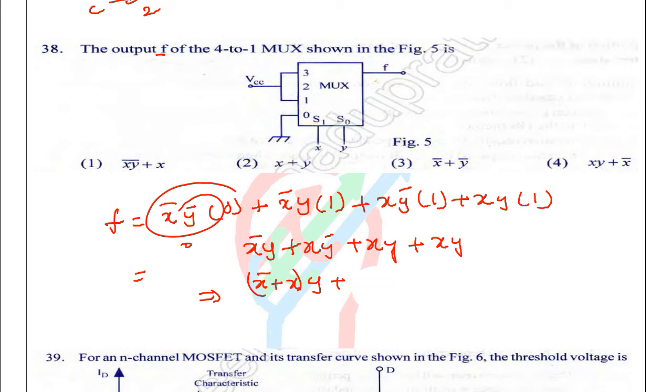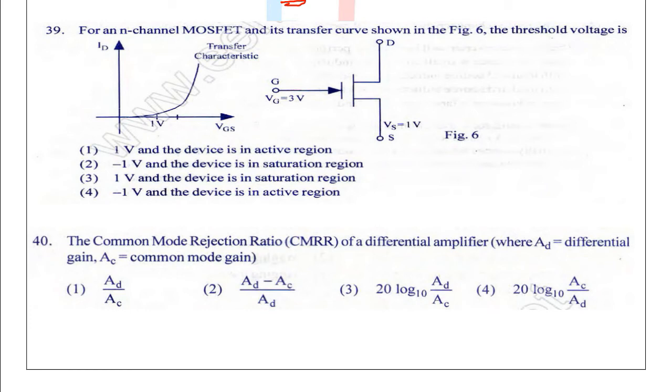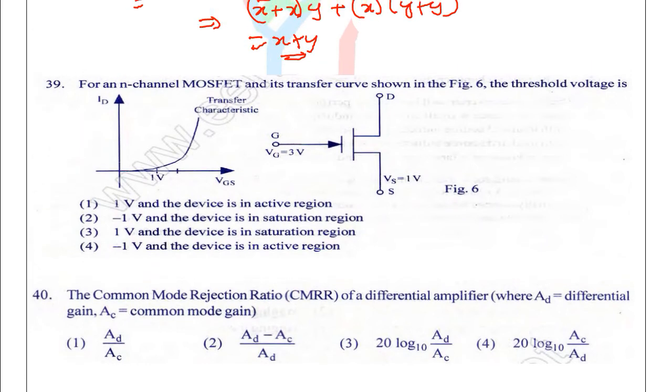So here it is X plus Y. This is important to be considered. X bar Y bar into zero - if you are taking the reverse you will get the wrong answer. So option 2 is the right option: X plus Y.